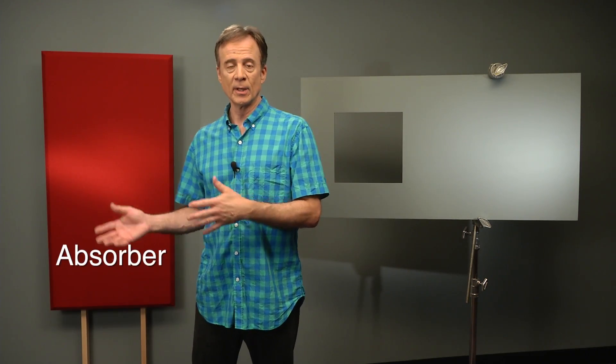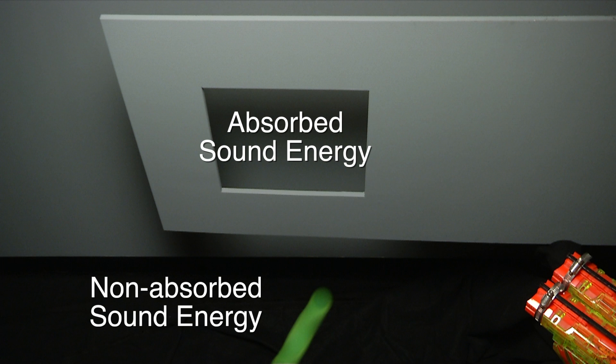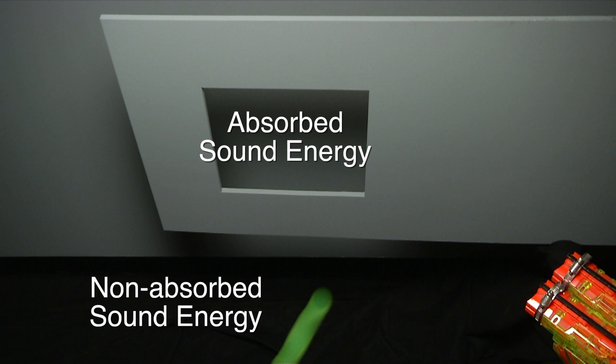Now let's use the first of our two acoustical tools, an absorber, to reduce the strength of sound bounces. To a sound wave, an absorber looks a little like a hole in the wall, so some of the energy doesn't come back. An absorber works by reducing the strength of reflected sound that would otherwise cause more destructive interference.